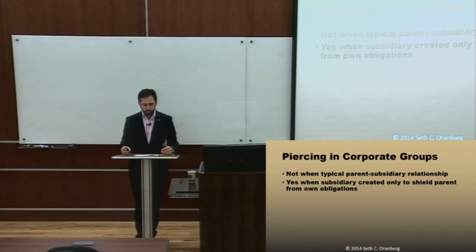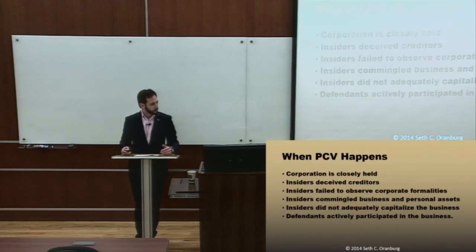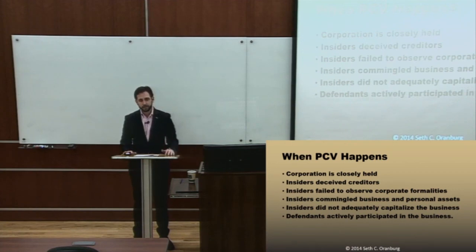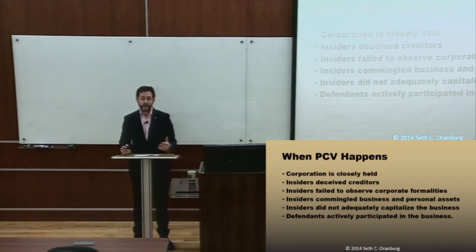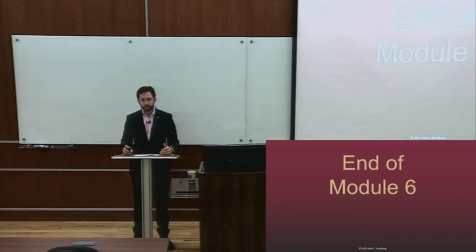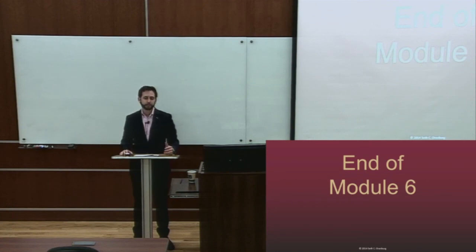The upshot is that in corporate groups, veil piercing when you have a wholly owned subsidiary is not going to occur when you have a typical parent-subsidiary relationship. You're going to see veil piercing occur when the subsidiary is created basically only to shield the parent from its own obligations. In a personal context, you'll generally see veil piercing where the corporation is closely held, where there's deceit against creditors, failure to observe corporate formalities, commingling of assets, inadequate capitalization — though maintaining a statutory minimum of insurance seems to be adequate capitalization based on our case law — and when the defendants actively participate in the business. Avoiding veil piercing is a major component of good corporate practice: keep good books and records, keep separate bank accounts, don't commingle assets, and ensure the corporation is created for its own independent purpose and not just to avoid the liability of the parent. If a company is created only to shield someone from liability, it's more likely to be disregarded. That concludes Module 6.